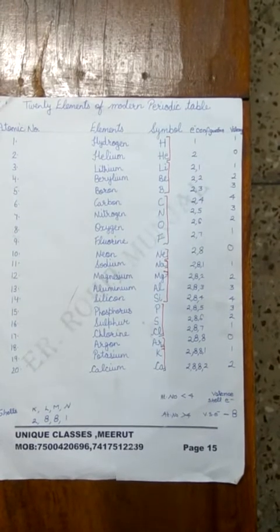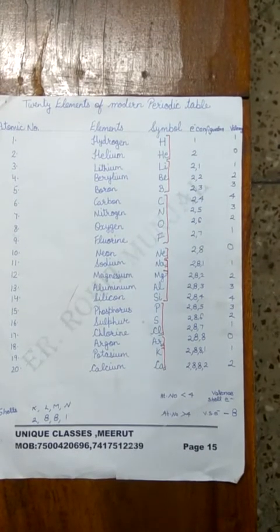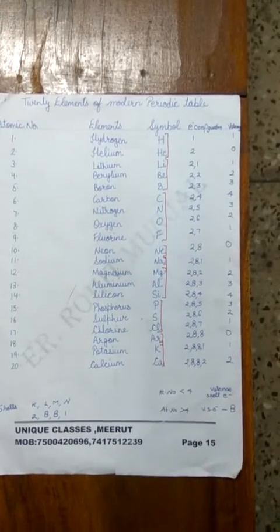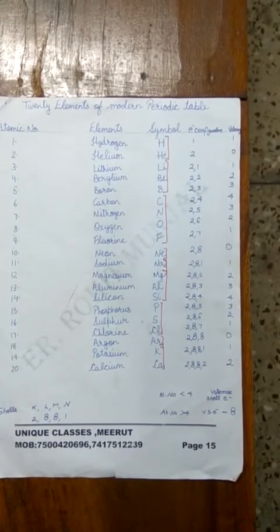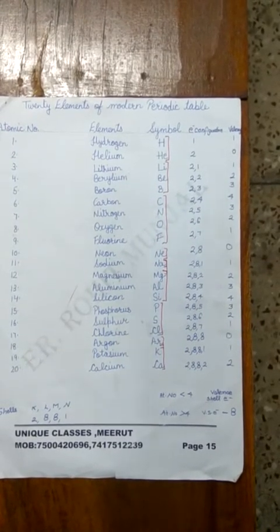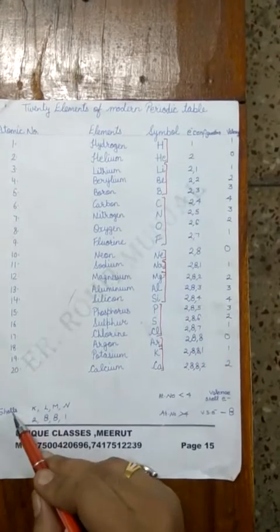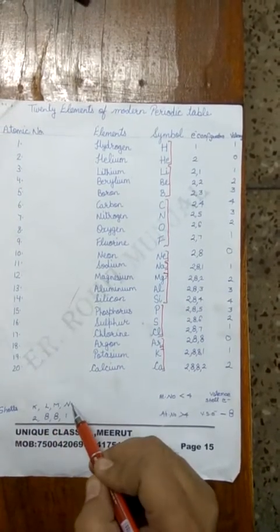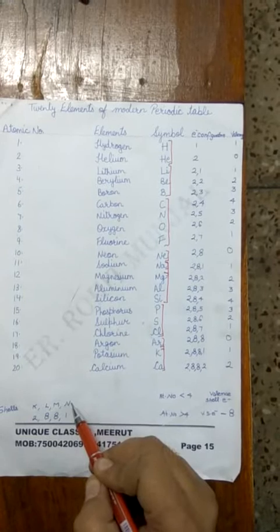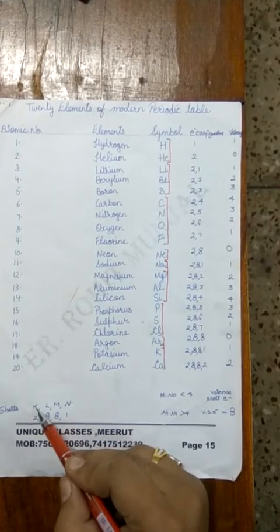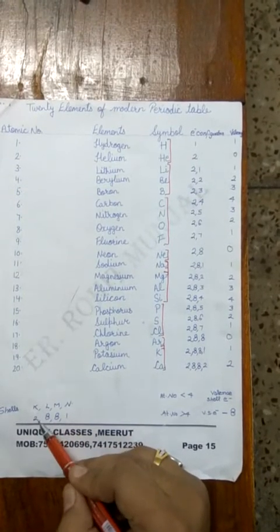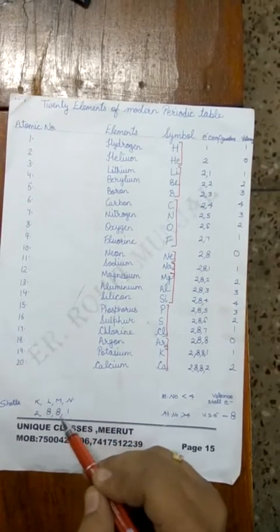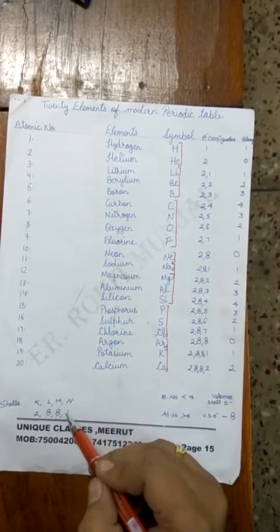The number of electrons in an element is also equal to the number of electrons in its shells. There are shells like K shell, L shell, M shell, and N shell. The K shell can accommodate a maximum of 2 electrons, the L shell 8, the M shell 8, and the N shell again 8.